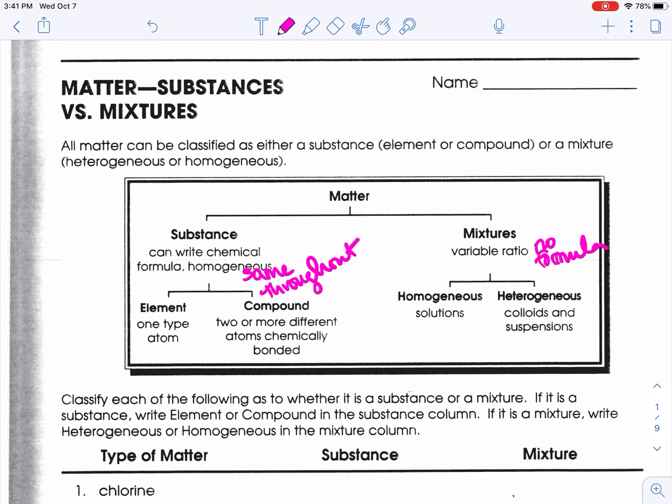Elements are one type of atom. Compounds are two or more atoms chemically bonded, so you're going to use the periodic table. Mixtures, on the other hand: homogeneous are the same throughout but with variable ratios (solutions), and heterogeneous are things like colloids and suspensions.